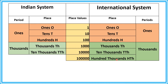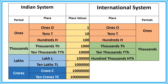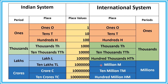In our Indian system, 100,000 is 1 lakh. So 1 lakh and 10 lakhs make the lakhs period, and crore and 10 crores make the crores period. In the international system, 10 lakhs is mentioned as 1 million. So 10 lakhs equals 1 million, 1 crore equals 10 million, and 10 crores equal 100 million. Million, 10 million, and 100 million form the billions period.